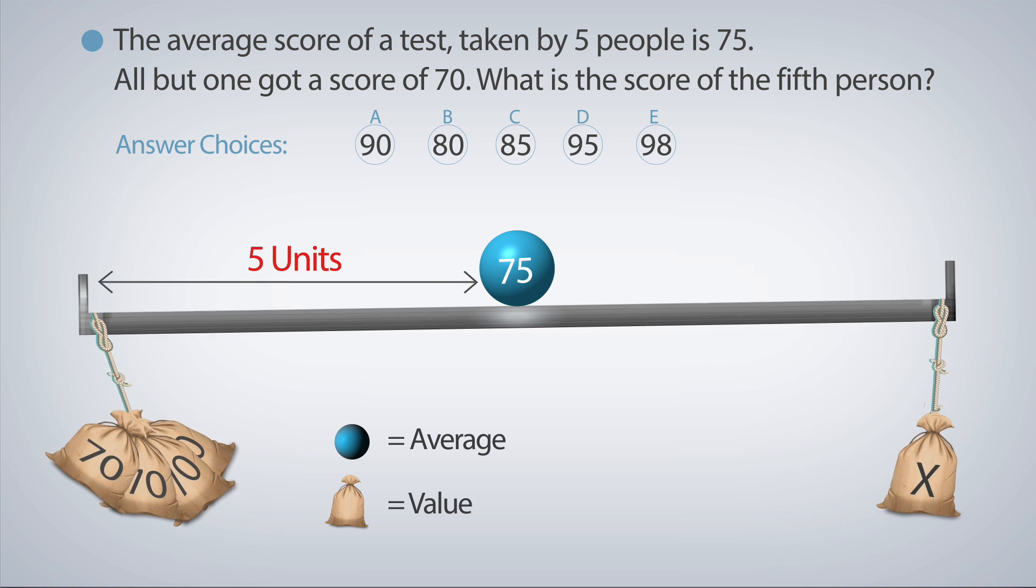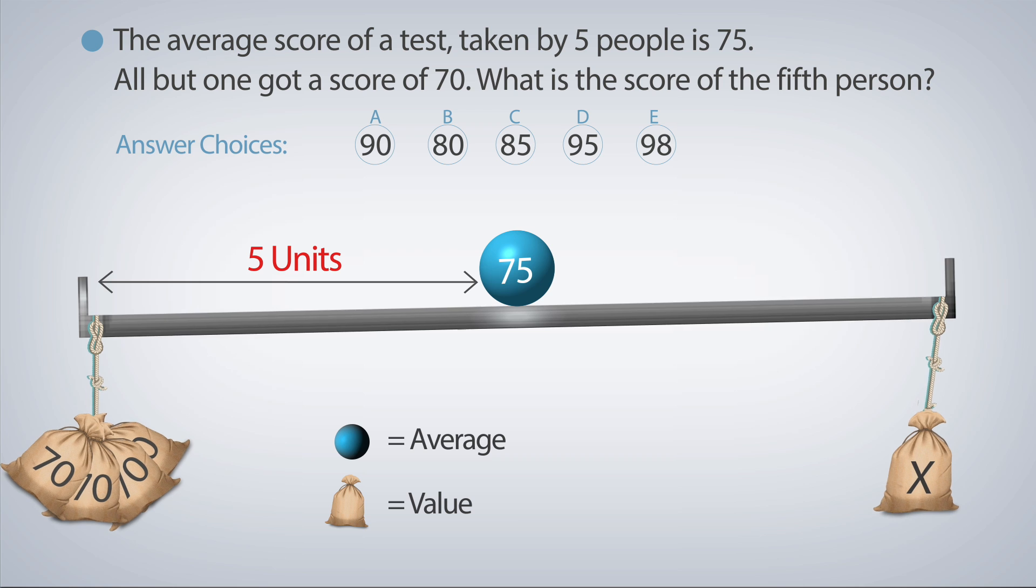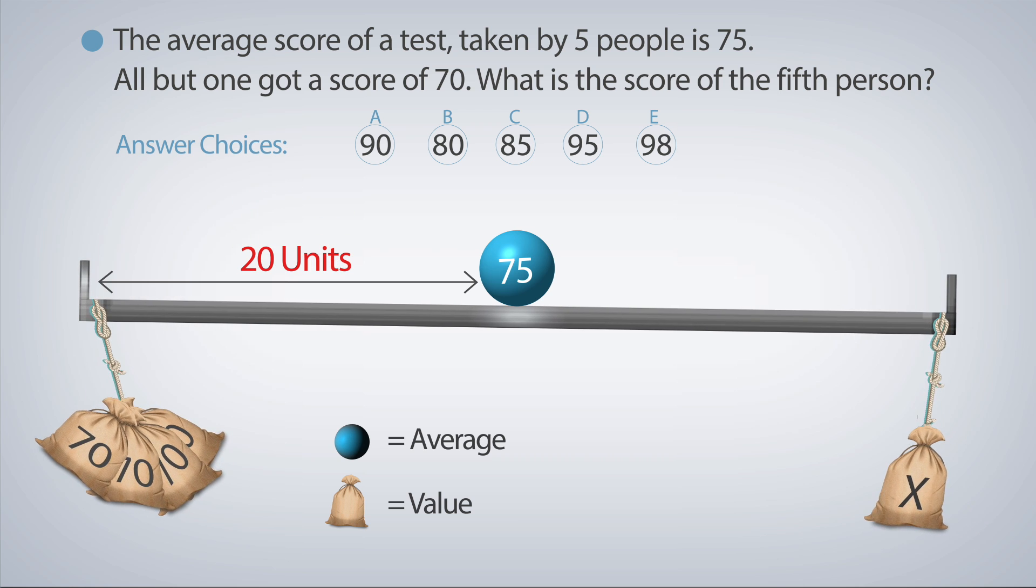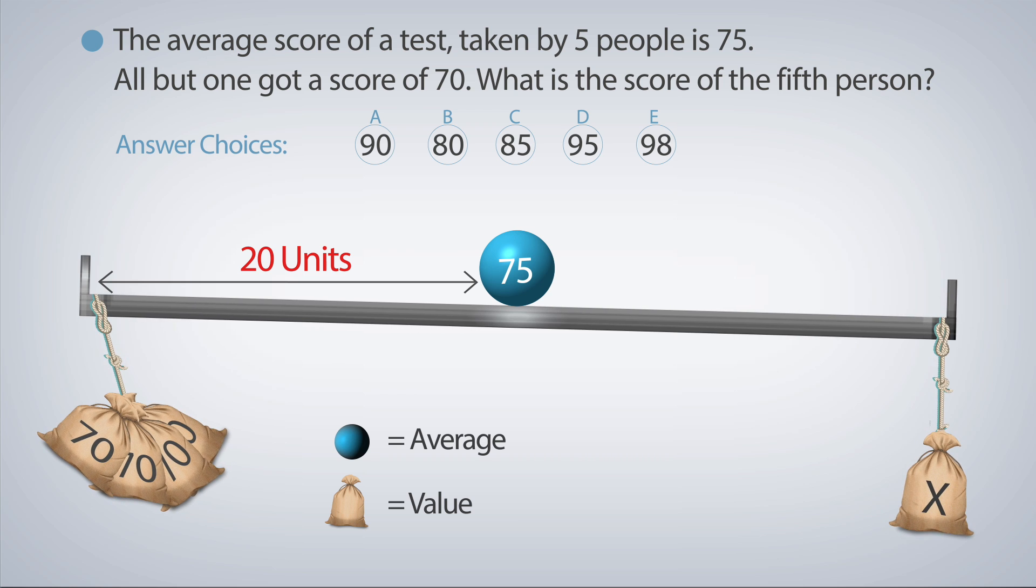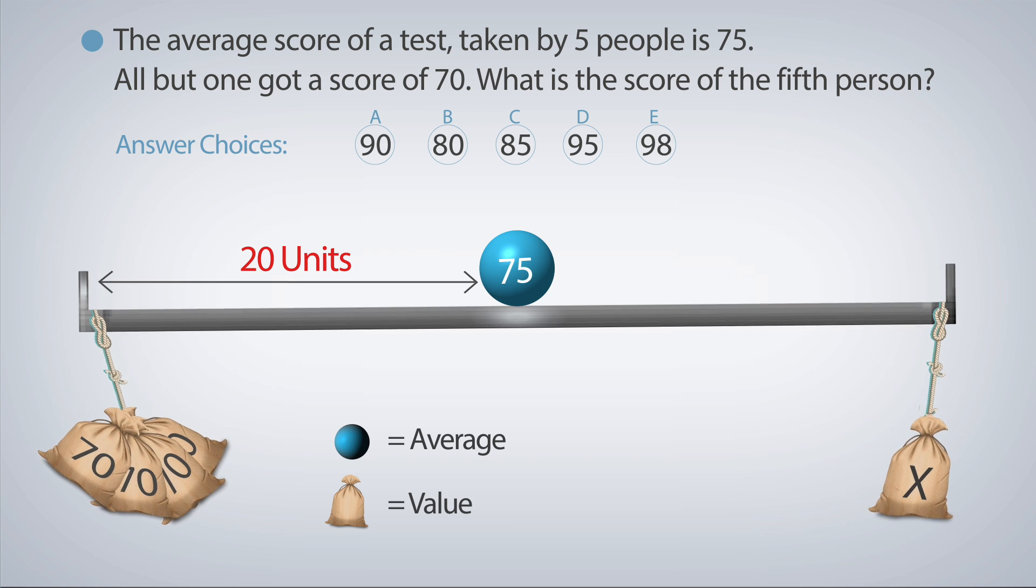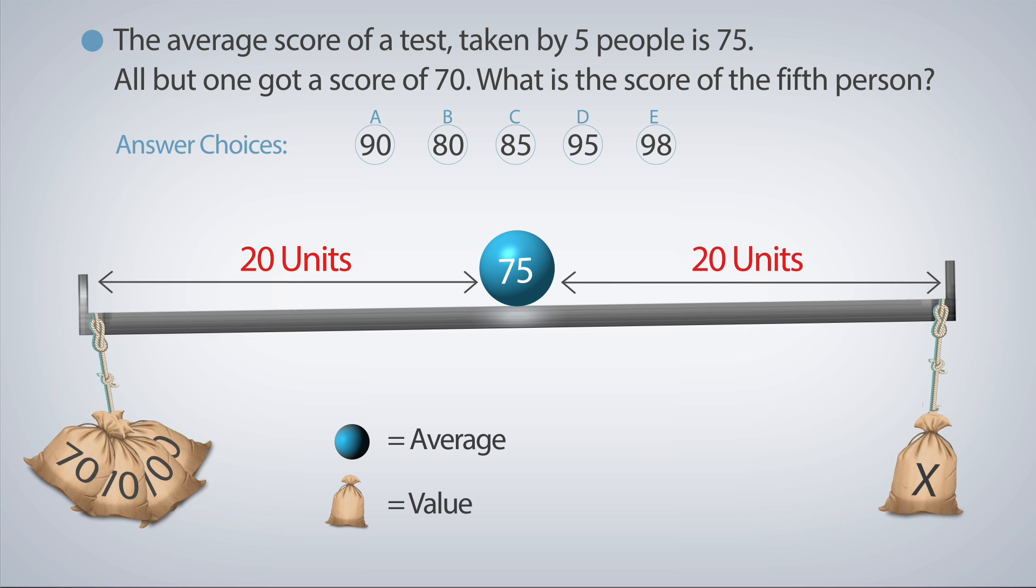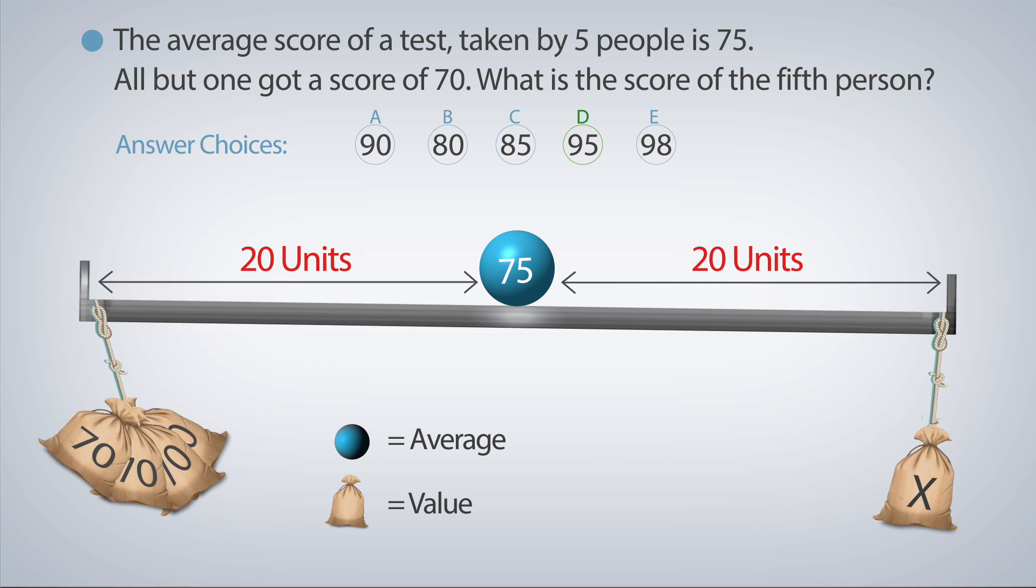On the left side, we have four elements 5 units away from the average, which means that the accumulated distance is 20 units. On the right side, there is only one element. In order for both sides to be balanced, this element must be 20 units away from the average as well, so the answer is D, 95.